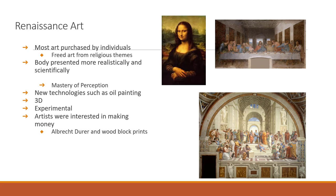Renaissance artists were very experimental. They started drawing 3D people instead of 2D images. Artists were also interested in making money—one example is Dürer, who did woodblock prints, carving images on wood blocks, applying ink, and pressing them to sell mass numbers of artistic works.